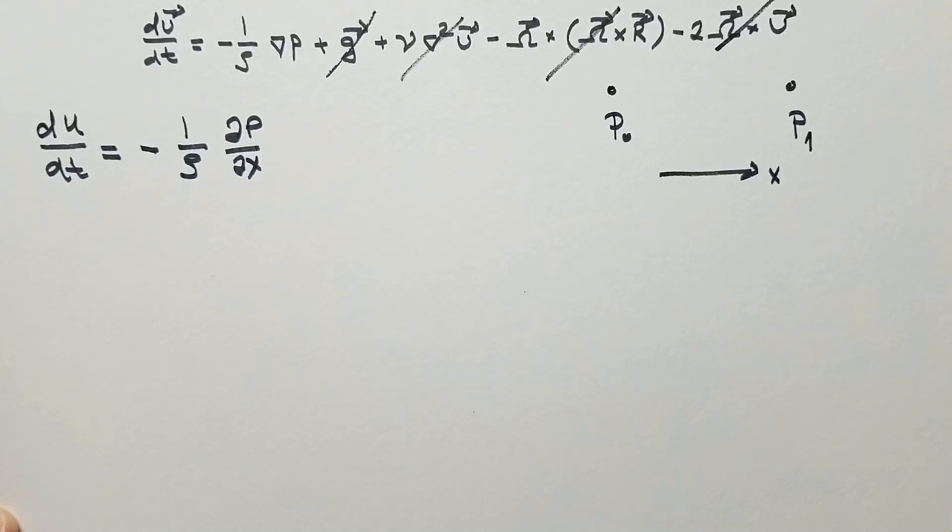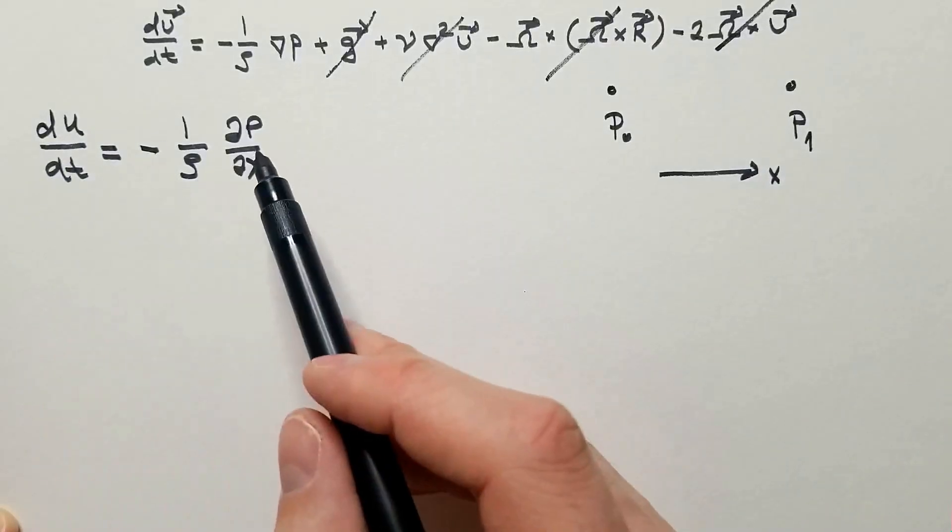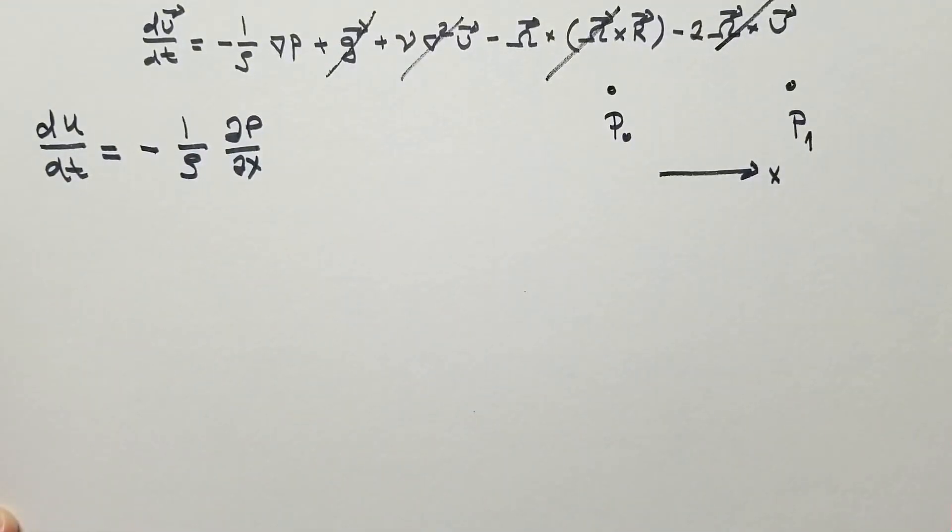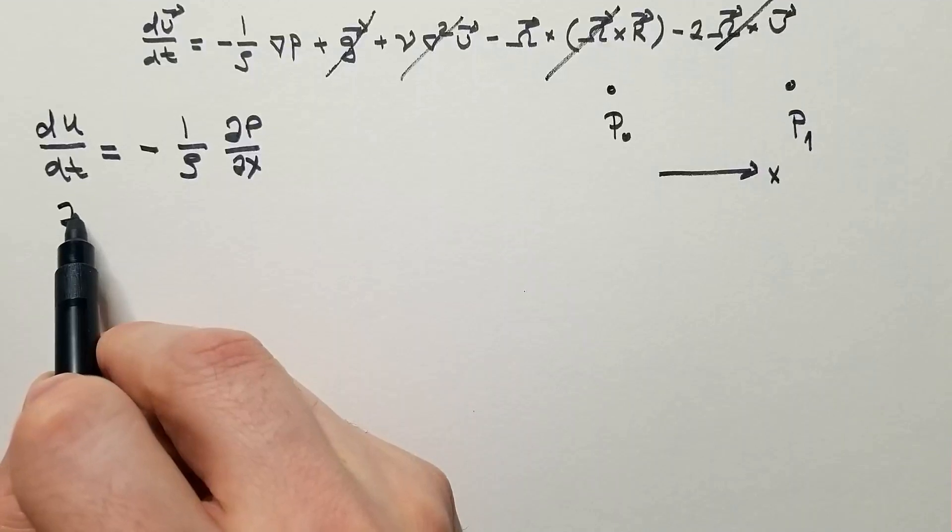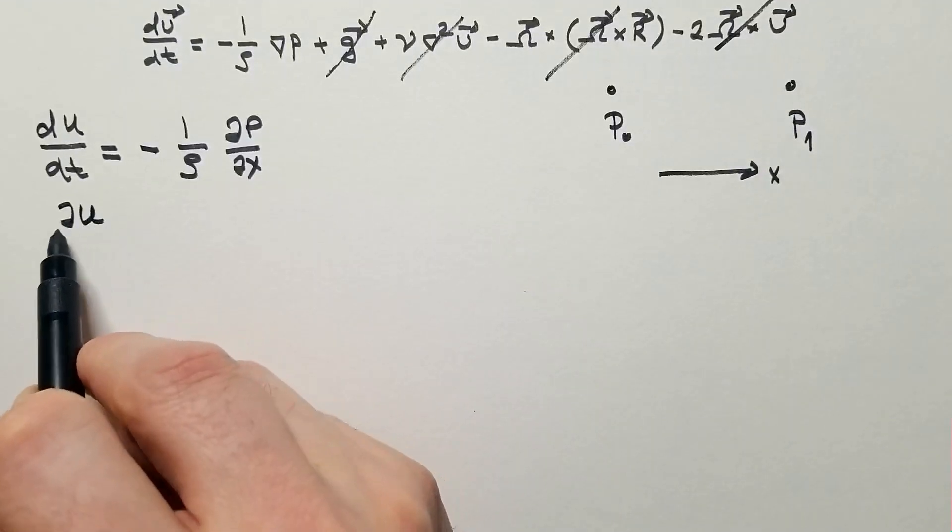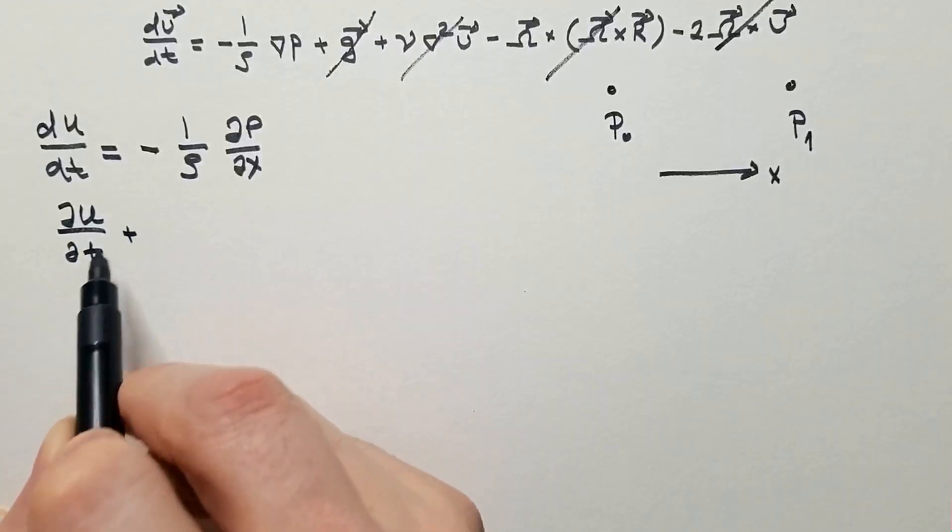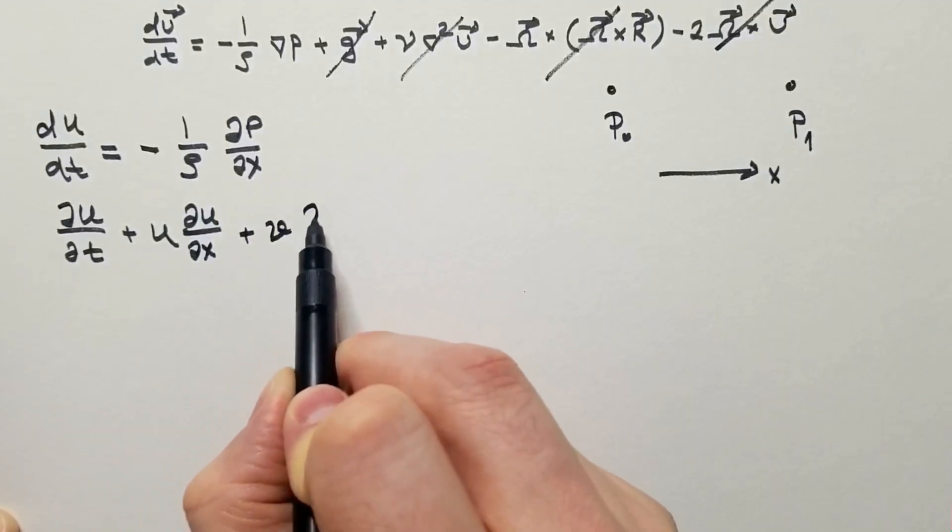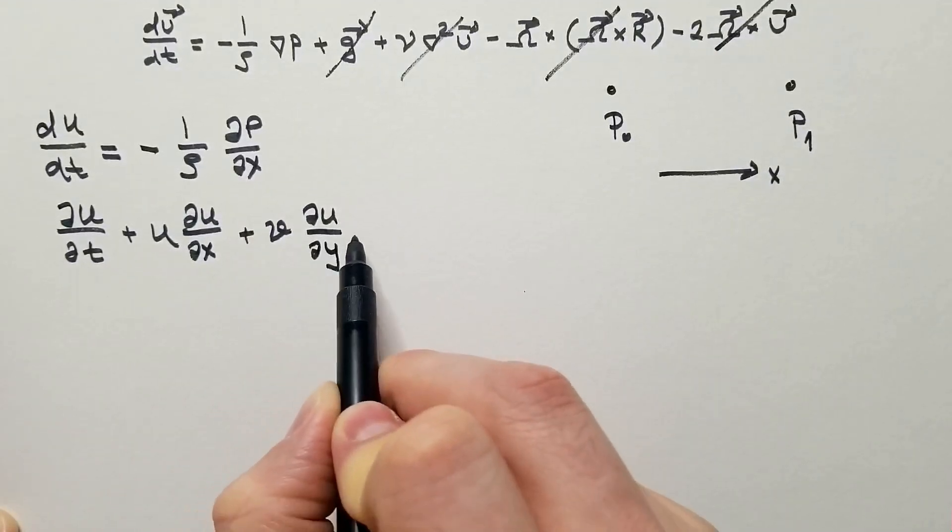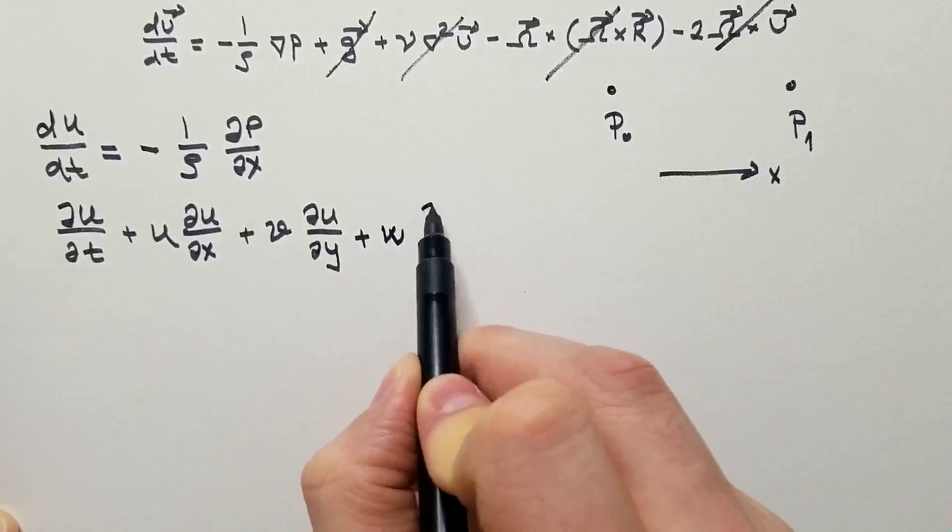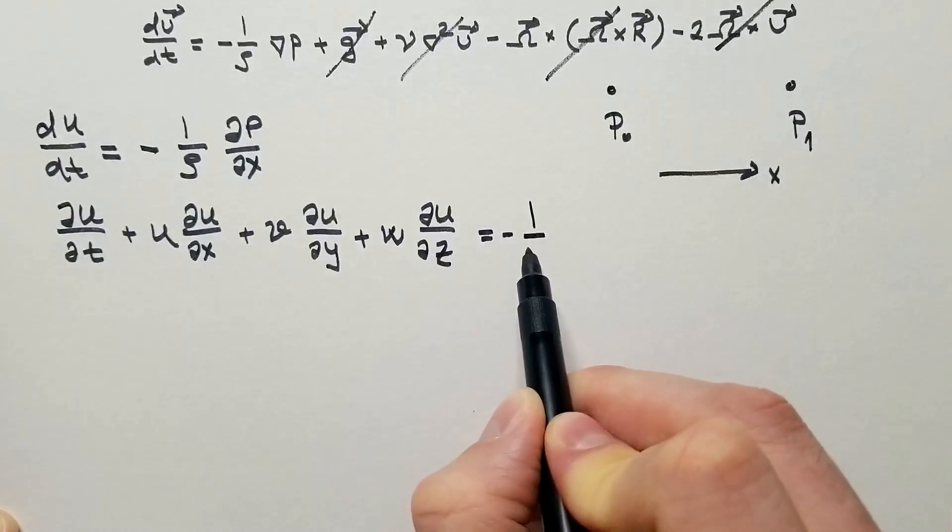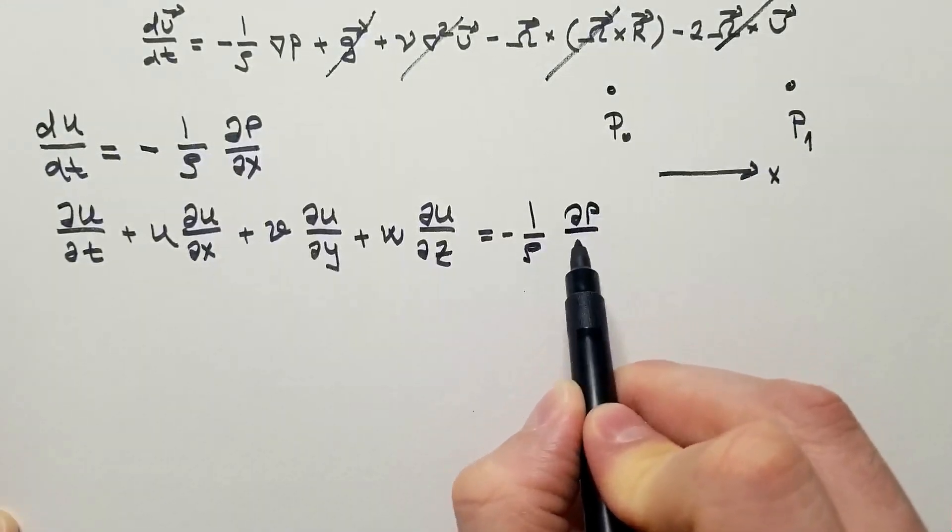Well, I can immediately multiply with dx and get here u du and here dp. But I will first write the left hand side as the sum of the individual derivative. delta u, delta t plus advection u, delta u, delta x plus v, delta u, delta y plus w, delta u, delta z equals minus 1 over rho, delta P, delta x.